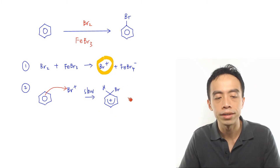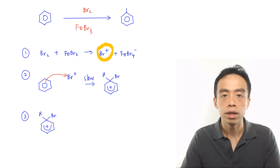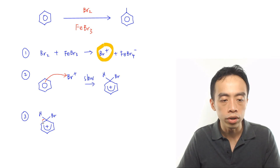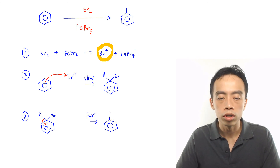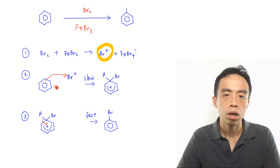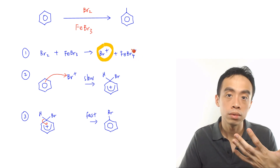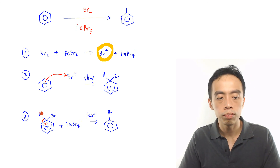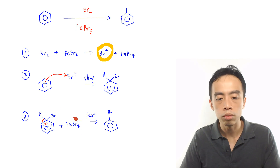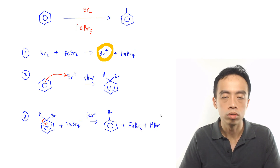So the intermediate will try to kick out an H+ — that is step 3. The C–H bond breaks, both electrons go back to benzene, the delocalized system is restored, and benzene is now bonded to Br — giving bromobenzene. Because it is a deprotonation, H+ is kicked out. This H+ combines with FeBr4- to regenerate the catalyst FeBr3, with HBr as a byproduct.